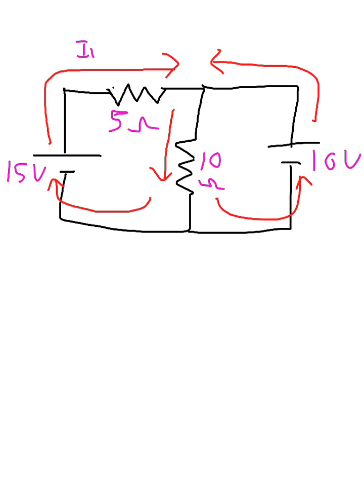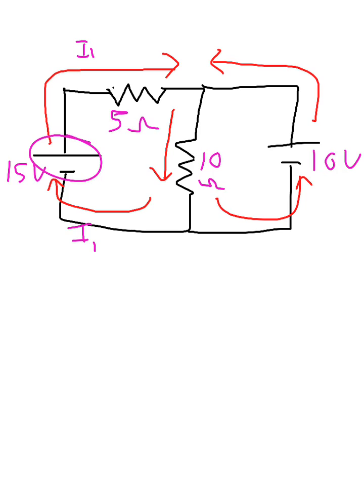I1 goes around through the resistor and comes back — so this current will also be I1, because the current leaving the battery equals the current entering the battery. Likewise, the other battery's current we'll call I2. The one remaining unmarked arrow in the middle we'll call I3. A junction is any intersection in the circuit where multiple wires come together at a point.